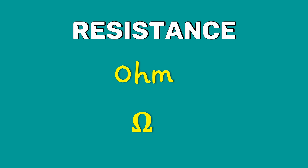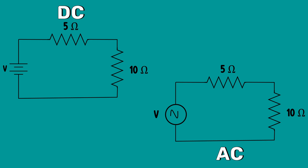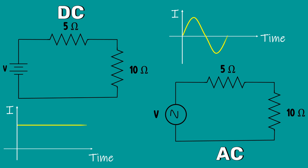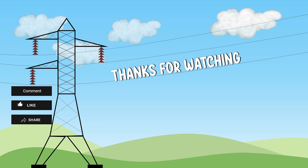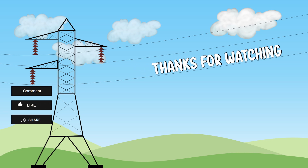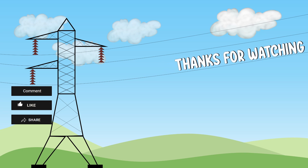The resistance value of the resistor in both AC and DC circuits is the same. The change in the current direction in the AC supply does not affect the resistor's behavior. That's all for today. Bye, see you in my next video.